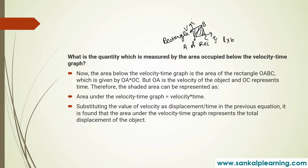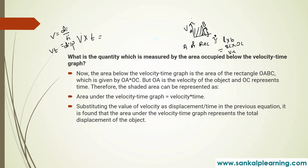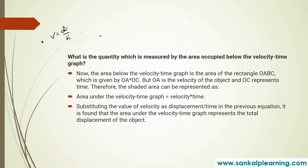BC represents velocity and OC represents time. Therefore the area equals velocity into time. Now, velocity equals displacement divided by time, so velocity into time is nothing but displacement. Therefore we can say that under the velocity-time graph, we can measure the displacement of the particle. The area under the velocity-time graph gives you displacement.